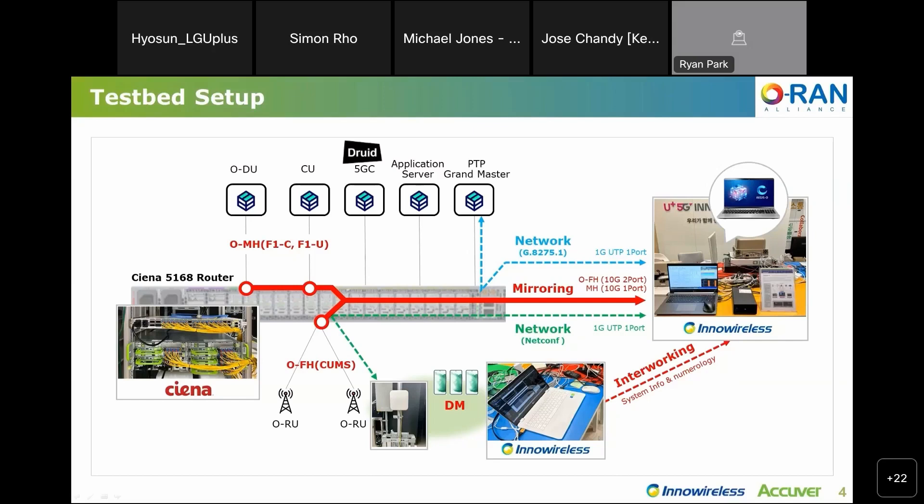In the right picture, for tests that require implementing a real radio channel in the lab, the testing environment could be configured using InnoWireless own solution, AIS — Air Interface Simulator. It is not in the picture; I would like to mention it just for your information. In the plugfest, we used it in some cases.